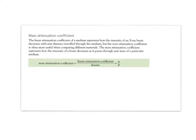So let's carry on where we left. We talked about attenuation coefficients, more importantly the linear attenuation coefficient, which tells you about the intensity of an x-ray beam and how it decreases with unit distance. The mass attenuation coefficient is more often useful because it allows you to compare different materials. It represents how the intensity of the beam decreases as it passes through unit mass of a particular medium. You can work it out using the linear attenuation coefficient divided by the density.